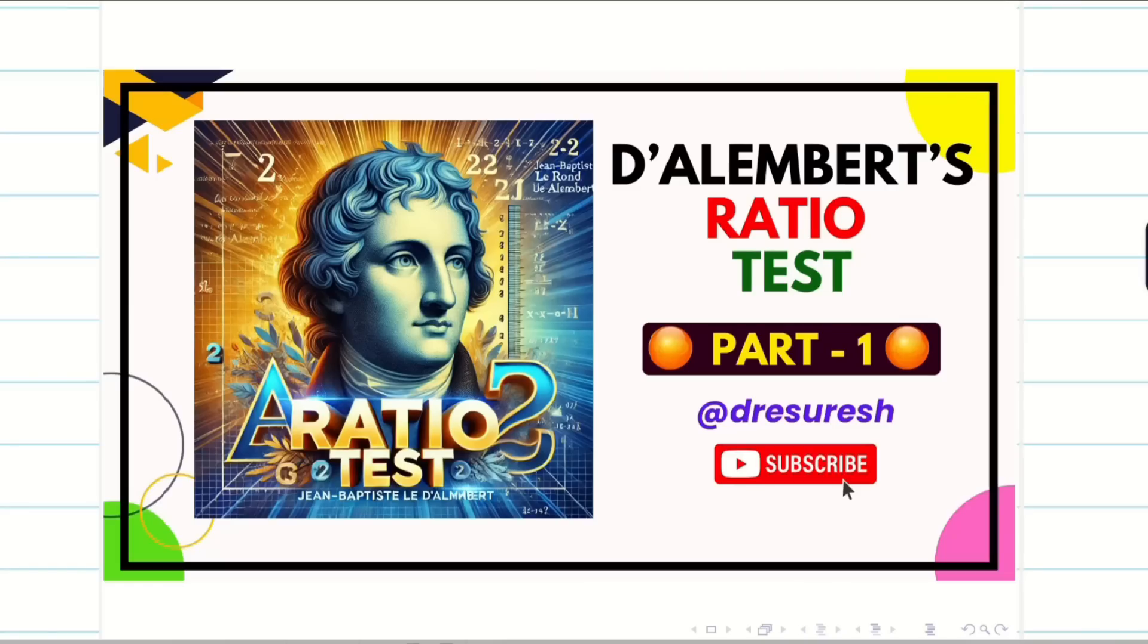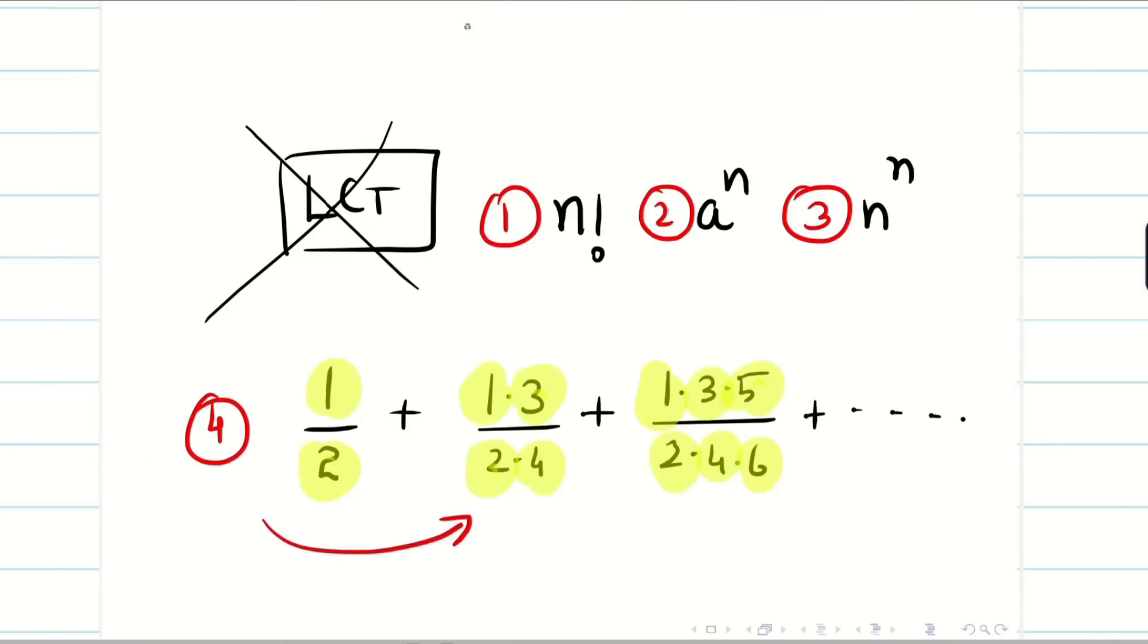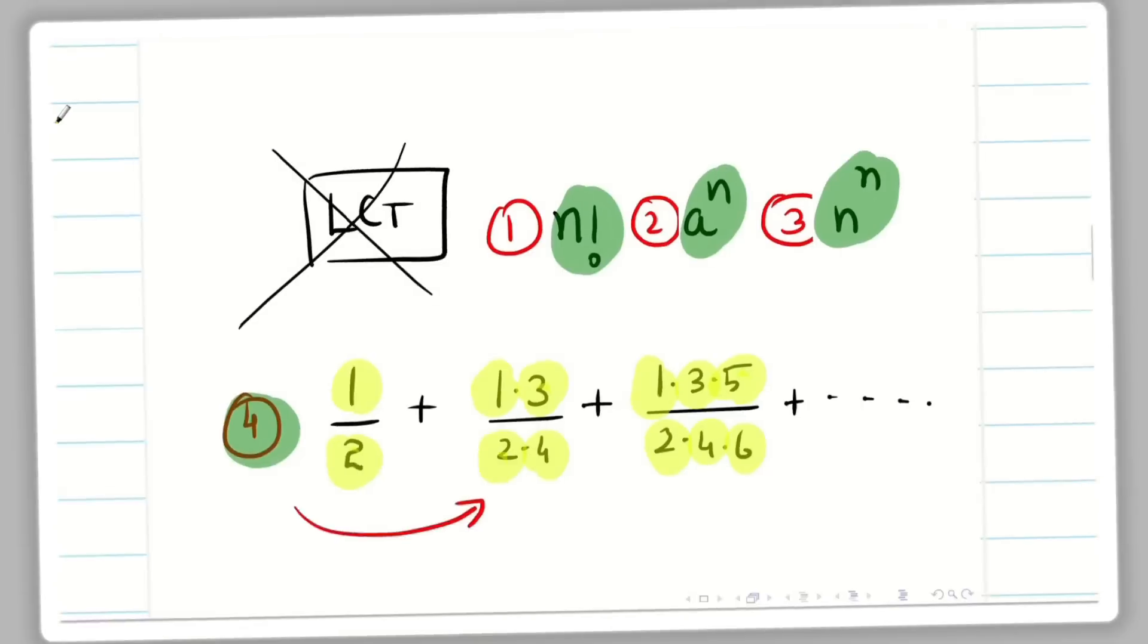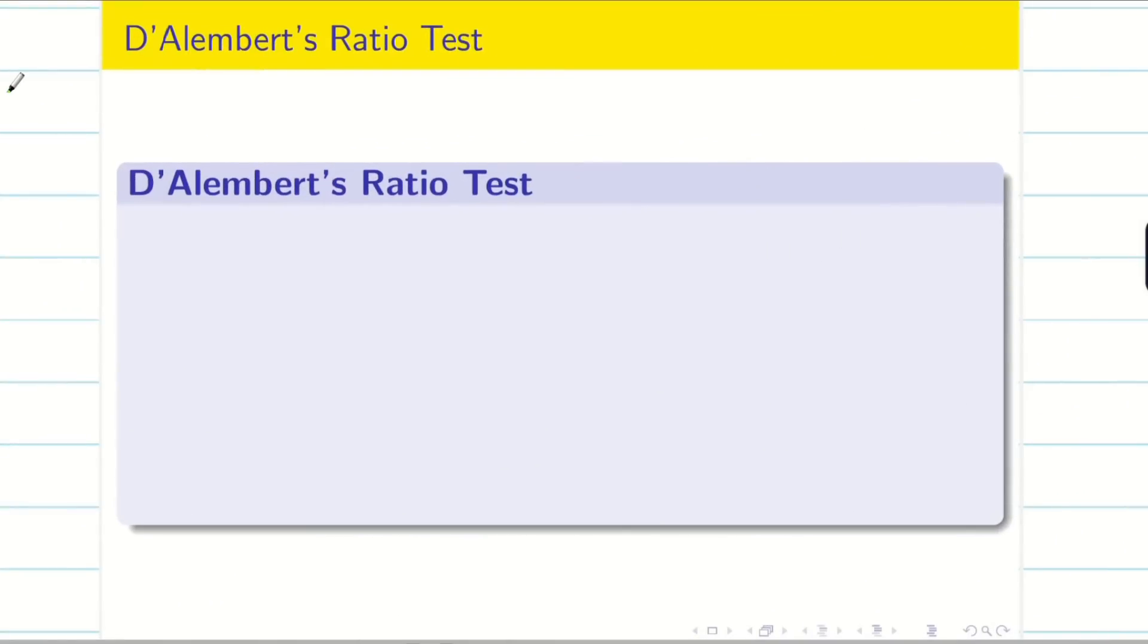So in this session, we are going to solve some problems on D'Alembert's Ratio Test. We just recall that limit comparison test fails when it has the terms n factorial, a power n, or n power n, or the terms are increasing. In that situation, we go to the method D'Alembert's Ratio Test.